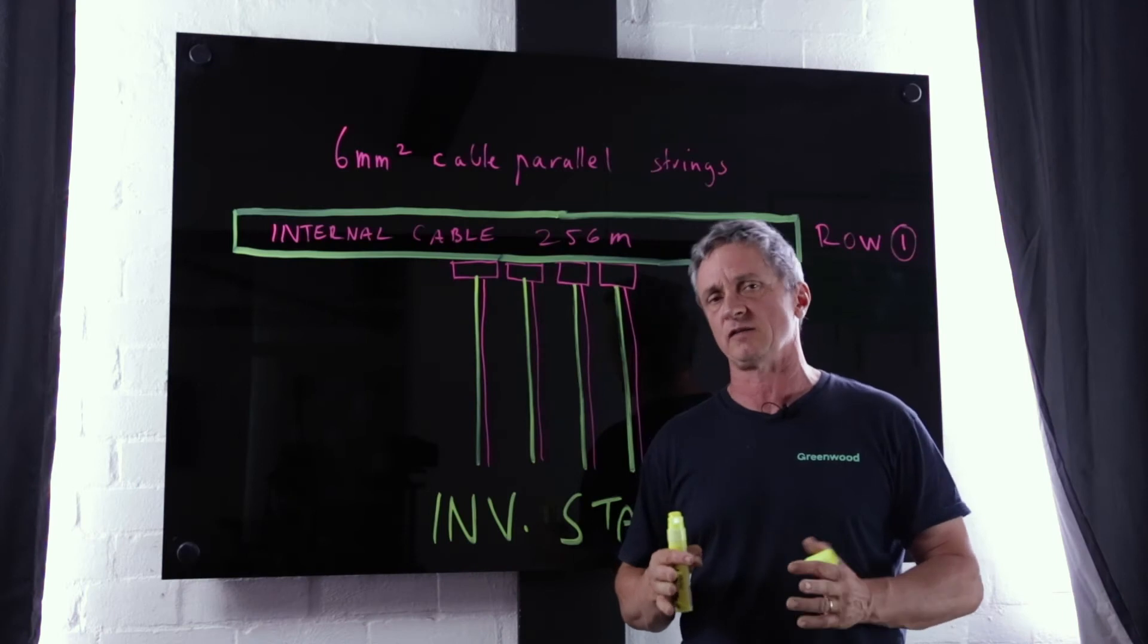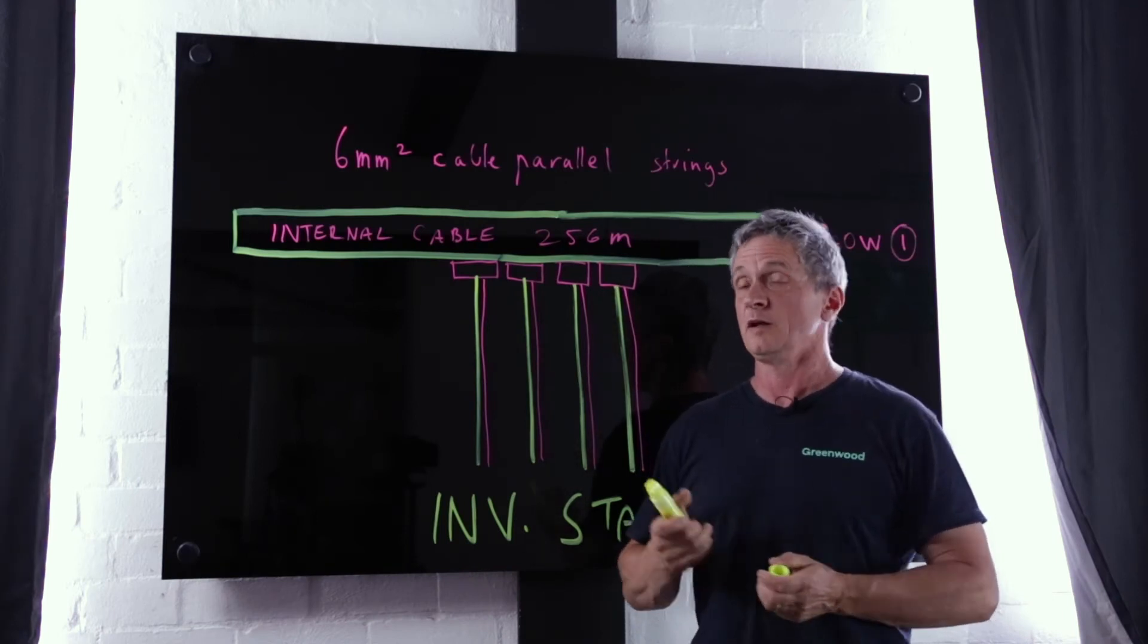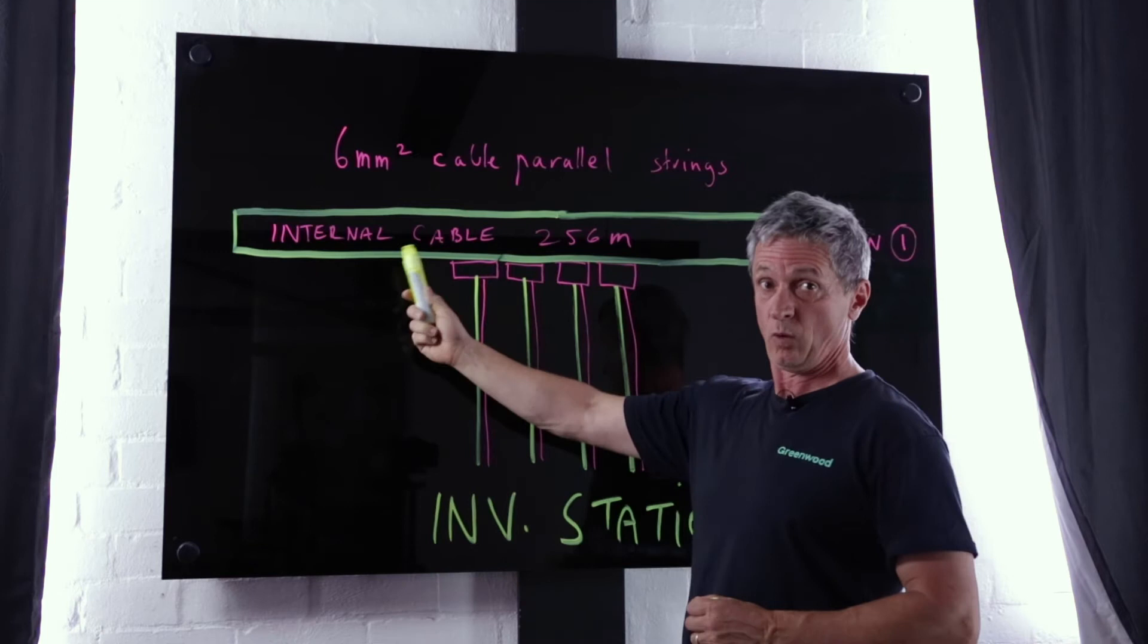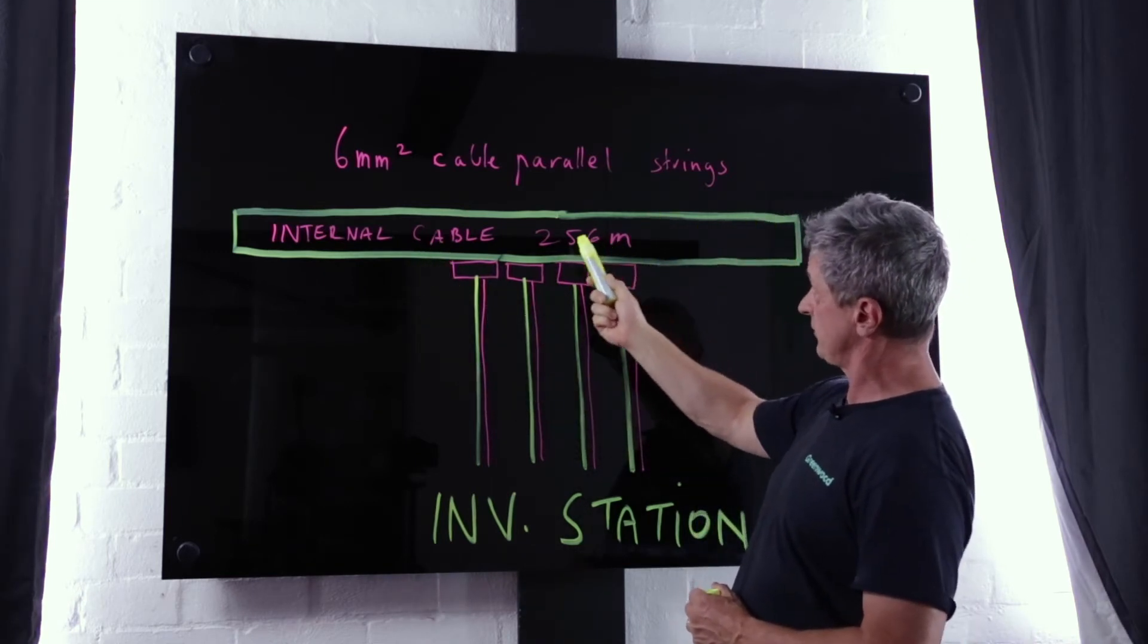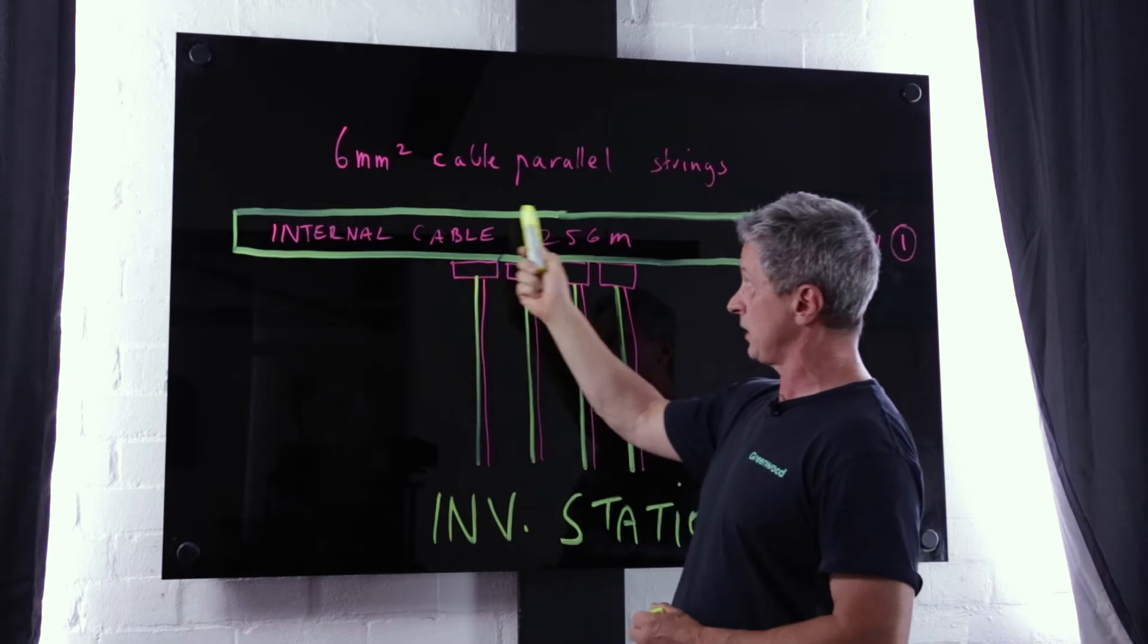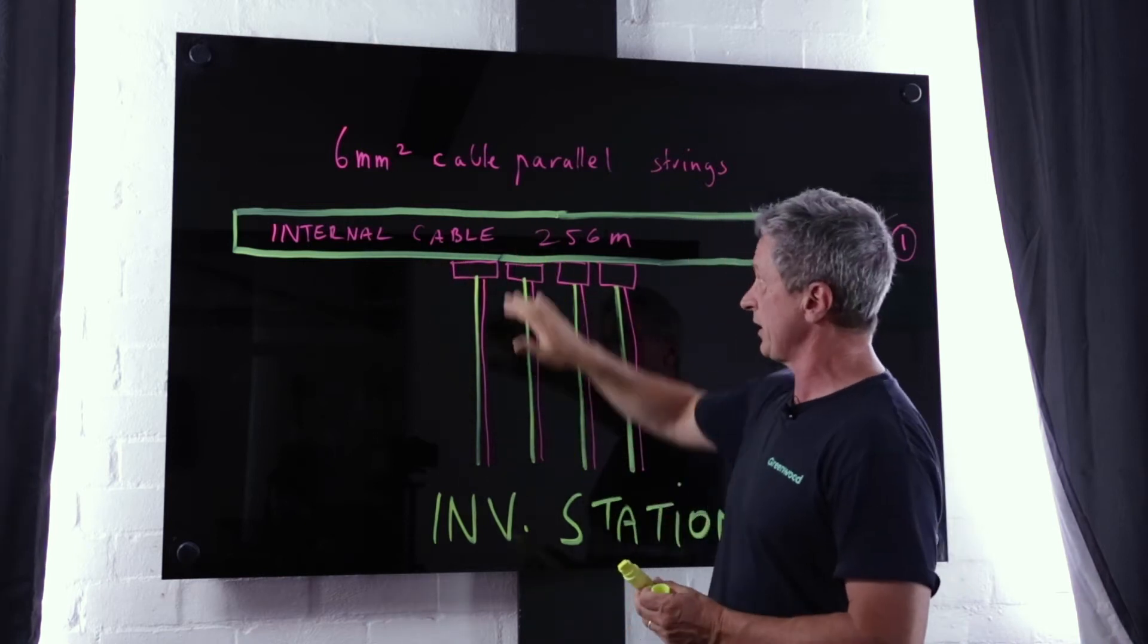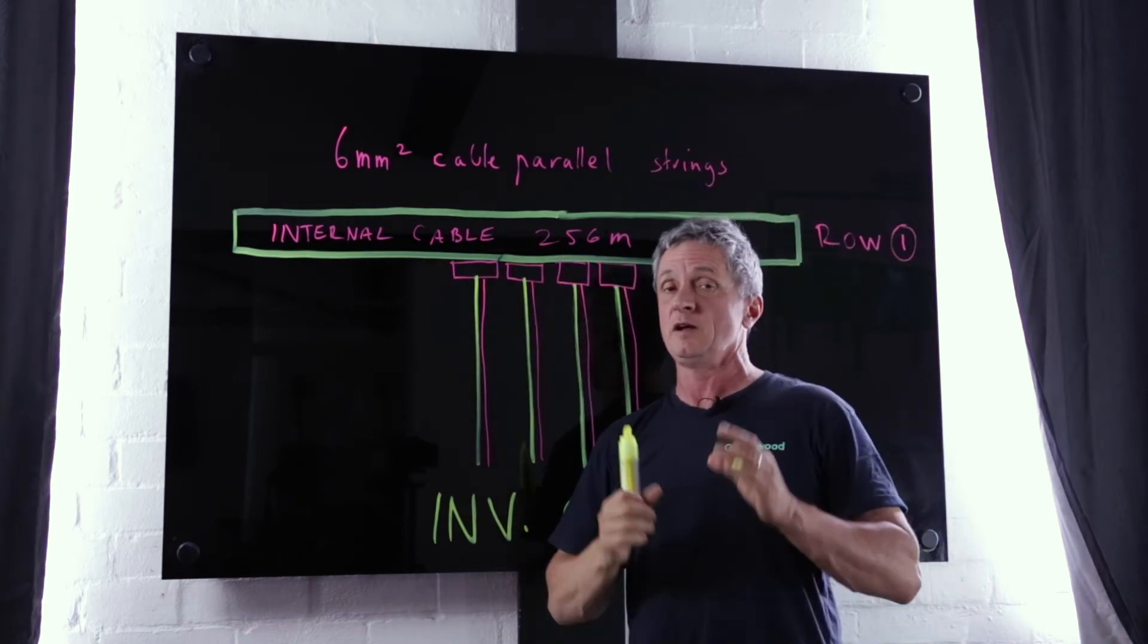In this case we're going to look at 6mm. So we have the same internal cabling requirements. Remember we have 4 strings on this side, 4 strings on this side all coming to a central point.